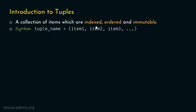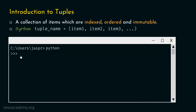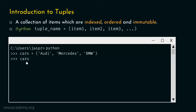Let's understand the meaning of these three terms with the help of an example. Let's open our command prompt and activate the Python interactive shell. Let's type the command: cars equal to Audi, Mercedes, BMW. We have a total of three cars in this tuple. After hitting enter and typing cars to verify, we get this tuple with three items: Audi, Mercedes, and BMW. This is what we intended to do.